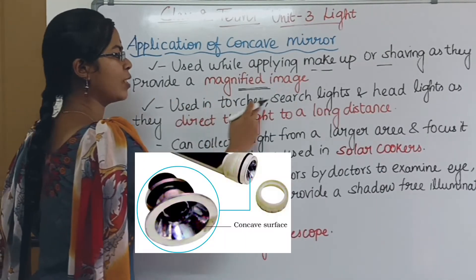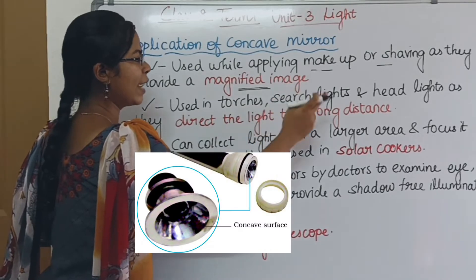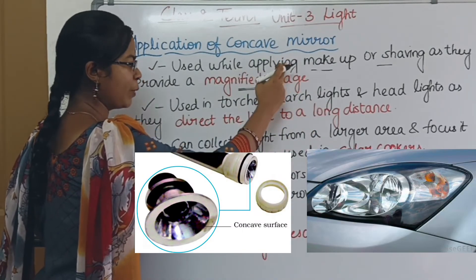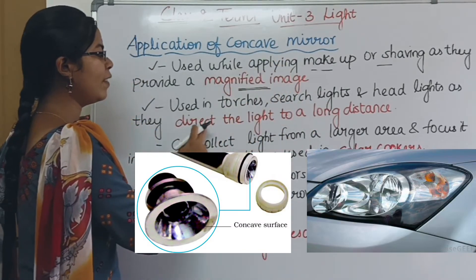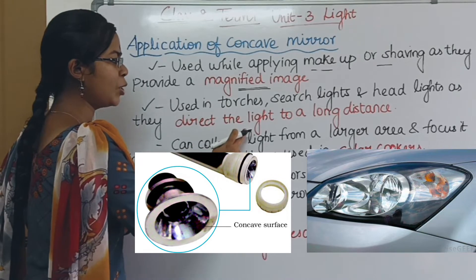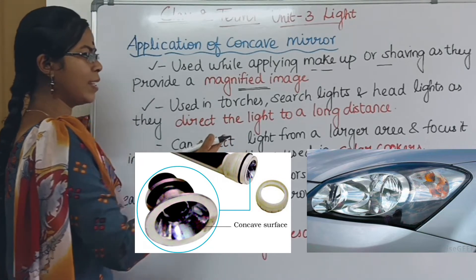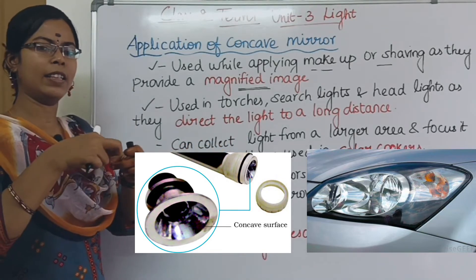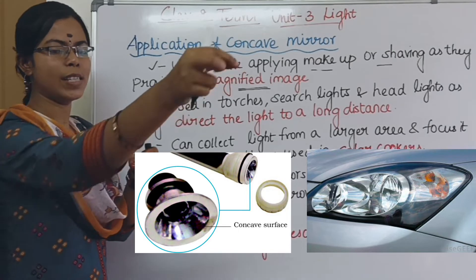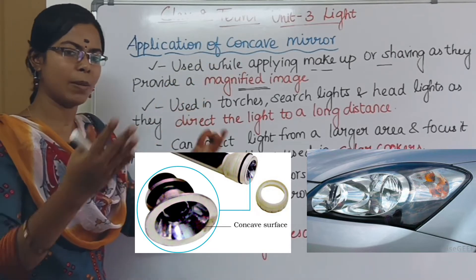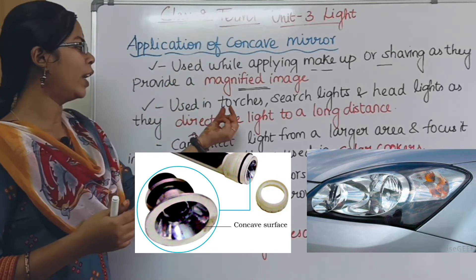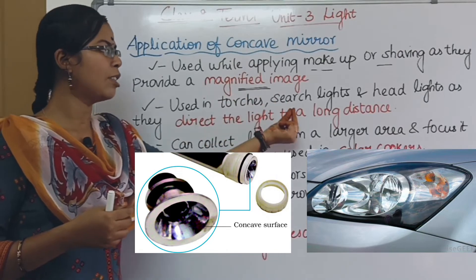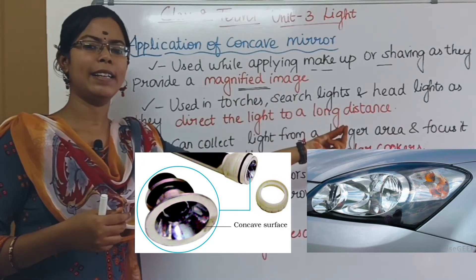Second point: we use concave mirrors in torches, searchlights, and headlights. They direct the light to a long distance. That is why torches, searchlights, and headlights use concave mirrors.